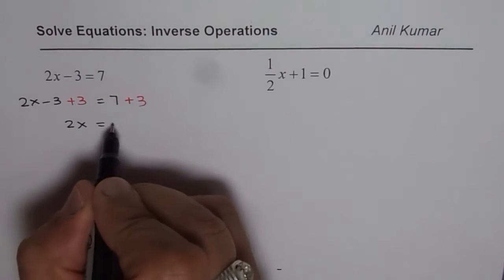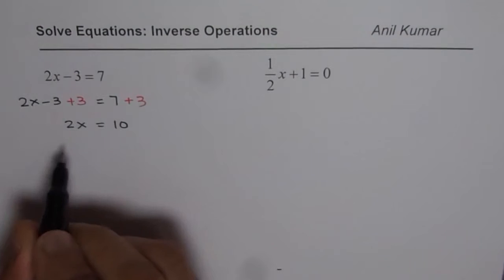So now minus 3 plus 3 is 0. So you get 2x on the left side. And 7 plus 3 is 10. Now to isolate x what should we do?